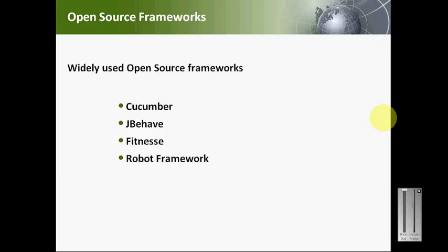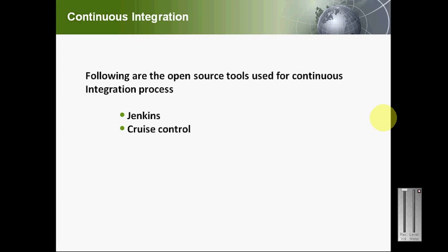For open source frameworks, there are BDD-level frameworks and keyword-driven frameworks available for test automation with built-in features. Cucumber and JBehave are built on BDD frameworks, while FitNesse and Robot Framework are built on keyword-driven frameworks. For continuous integration, Jenkins and CruiseControl are the two widely used open source tools. Jenkins has many active plugins and can be integrated with different tools and technologies to achieve the continuous integration process very effectively.